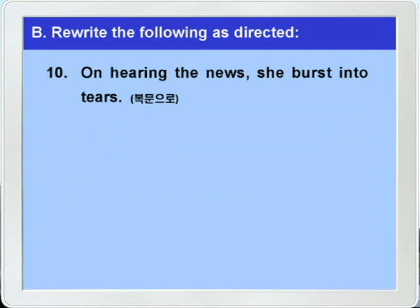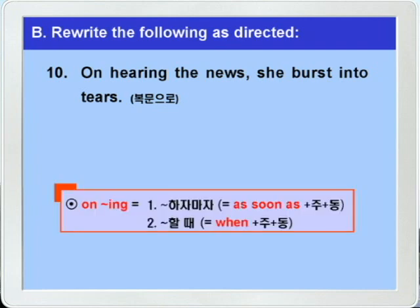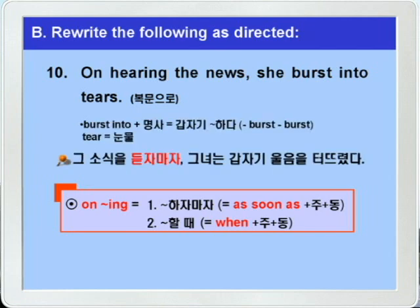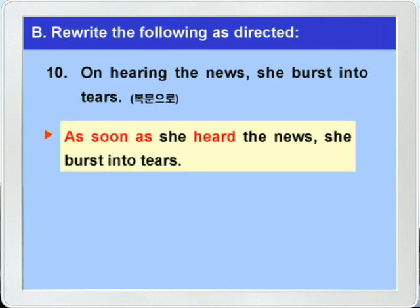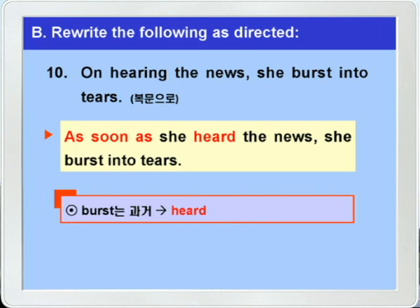다음 10번: 'On hearing the news, she burst into tears.' 10번은 복문으로 고치는 문제가 되겠습니다. 'on -ing'를 '~하자마자'의 뜻일 때는 'as soon as 주어+동사', '~할 때'의 뜻일 때는 'when 주어+동사'를 써서 바꾸면 되는데, 일단 해석을 해봐야겠습니다. 'burst into 명사'는 '갑자기 뭐뭐하다'는 뜻이죠. burst는 현재·과거·과거분사 형태가 똑같습니다. tear는 눈물의 의미로 명사가 되면 보통 복수형 tears로 쓰이죠. 그래서 '그 소식을 듣자마자 그녀는 갑자기 울음을 터뜨렸다' 이렇게 해석이 되죠. 'as soon as'를 쓰는 것이 더 좋겠습니다. 정답: 'As soon as she heard the news, she burst into tears.' 따라서 'on hearing'이 복문으로 고쳐질 때 hear의 과거형인 heard가 된 것입니다.